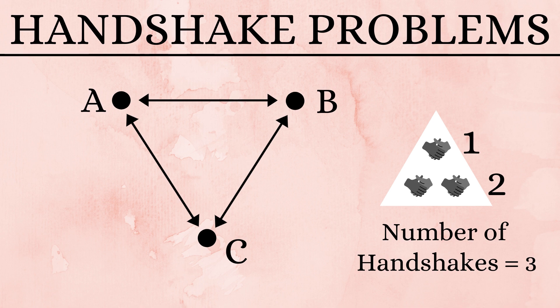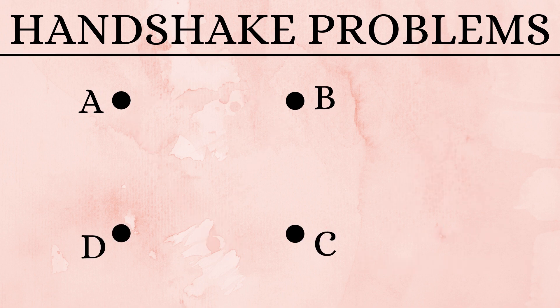Next, let us consider four people A, B, C and D. First, A shakes hand with the other three people B, C and D.